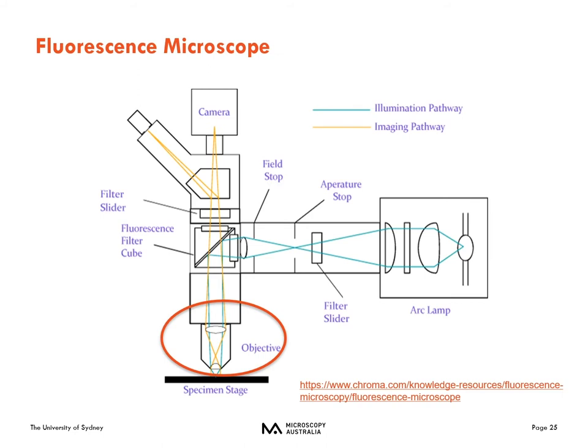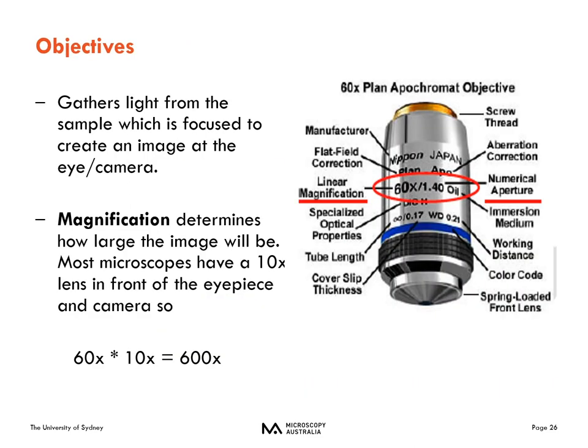The objective sits closest to your sample — typically anywhere from 100 microns to about four millimeters away. It gathers light from the sample, which is then focused to create an image at the eye or camera. The objective has a lot of information written on its barrel, and I'm going to talk through each of those numbers.